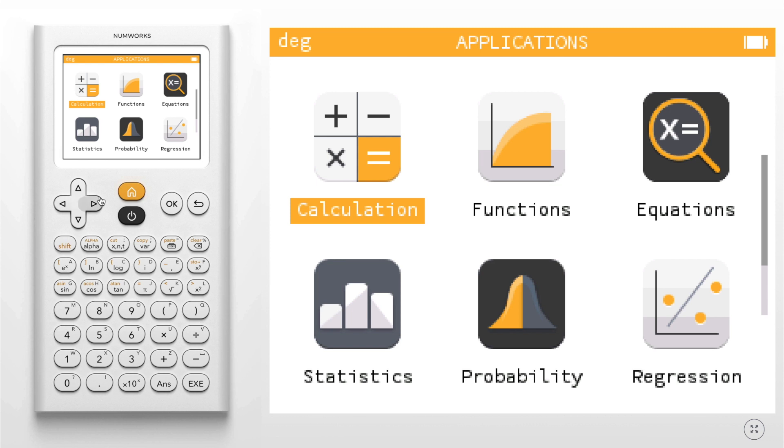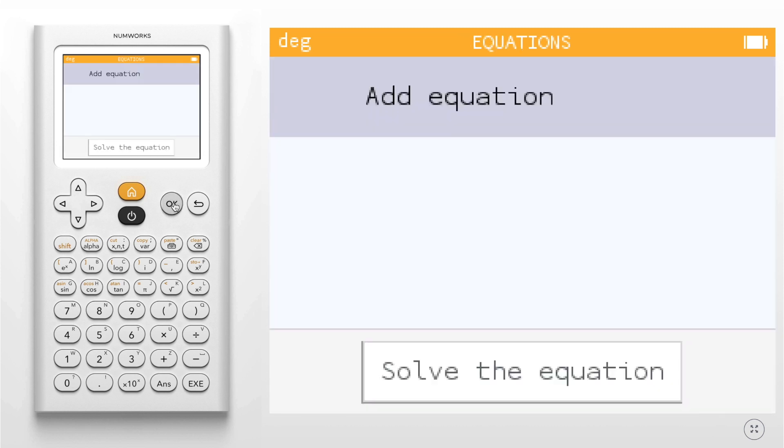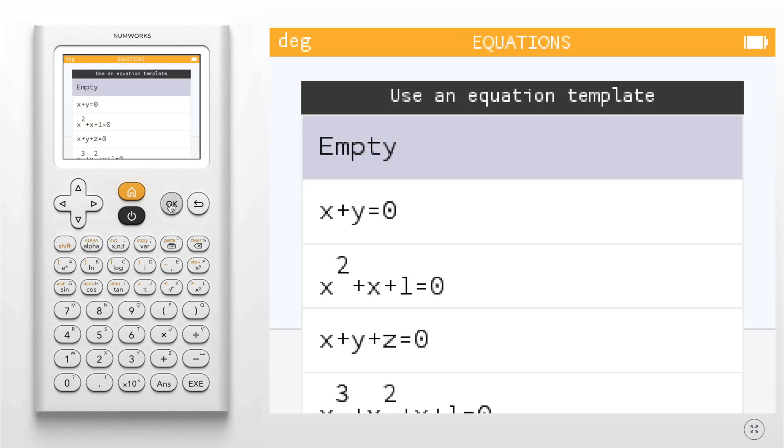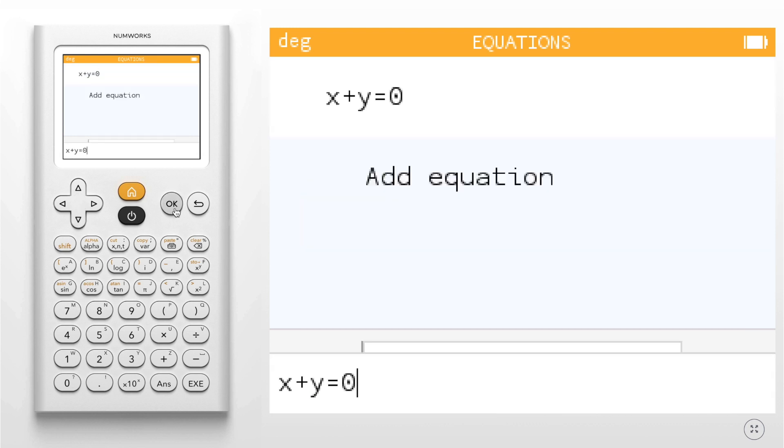To begin, enter the equations application. We're going to add our first equation in the system. I'm going to select the first template x plus y equals 0 and modify it to read 5x plus 7y equals 11.